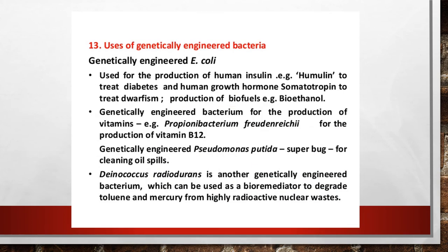Genetically engineered E. coli is a bacteria used in the production of human insulin — example: Humulin — to treat diabetes, and human growth hormone somatotropin is used to treat dwarfism. Production of biofuel such as bioethanol is also done using E. coli. Genetically engineered bacterium is also used for the production of vitamins — example: Propionobacterium freudenreichii for production of vitamin B12. Genetically engineered Pseudomonas putida is used for cleaning oil spills.